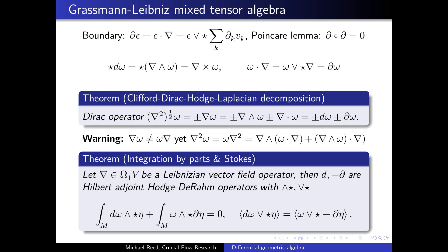Another particularly interesting theorem is integration by parts that can be fully generalized in terms of the Grassmann-Leibniz mixed tensor algebra. We let Nabla be part of the Leibnizian vector field operator, and then use D and the boundary operator. These turn out to be Hilbert adjoint Hodge-DeRham operators which satisfy these properties. That's what this theorem says.